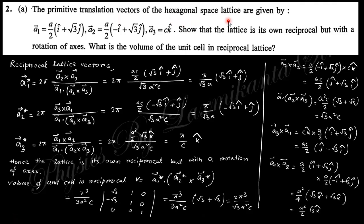Question number 2 says the primitive translational vectors of hexagonal space lattice are given here. These are the three primitive translational vectors: a1 vector, a2 vector, a3 vector.